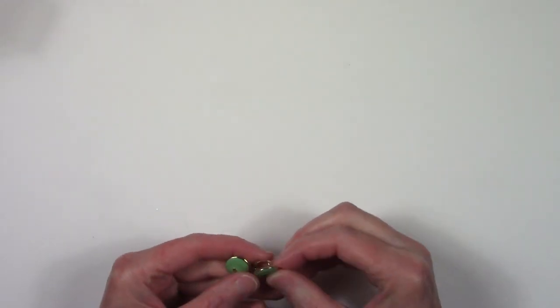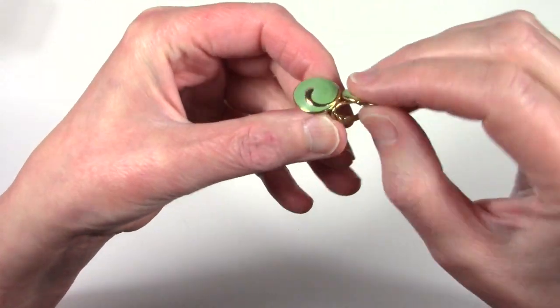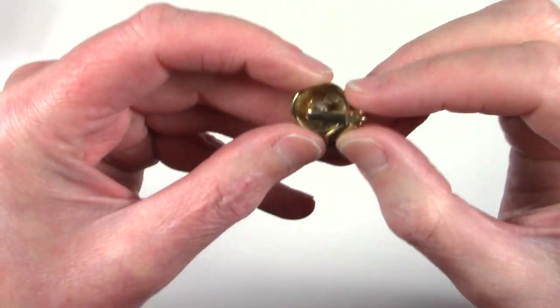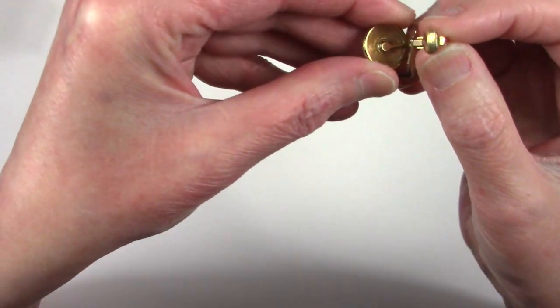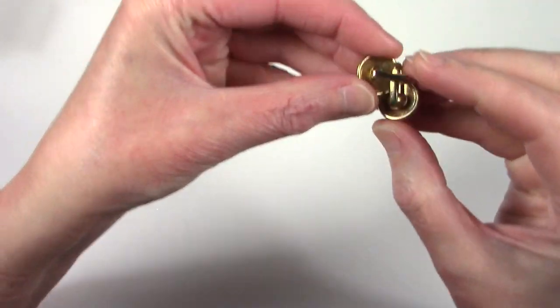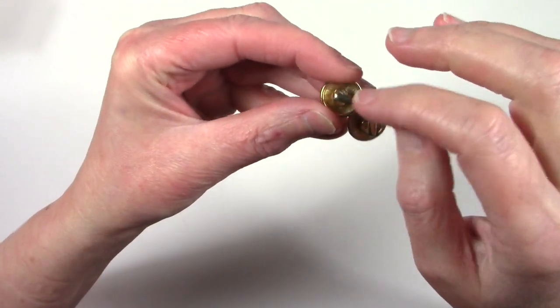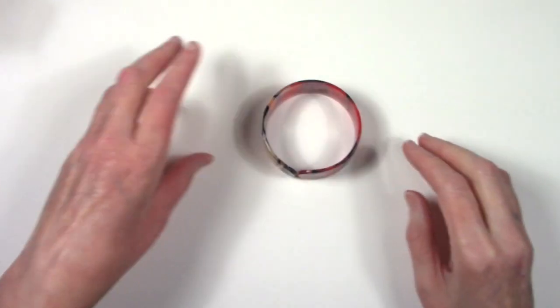Fun clip on earrings. I like the swirl in there with the enameling. They are unsigned, but they are not from the 50s or 60s because of the design. They're probably 80s with that design on the back.